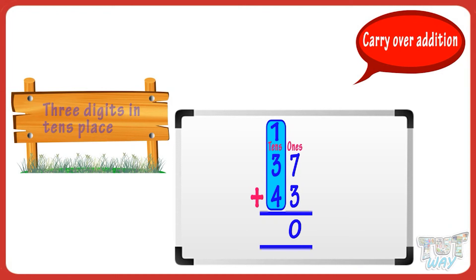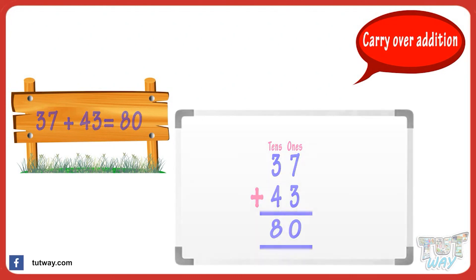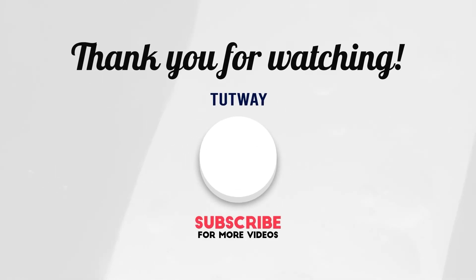1 plus 3 plus 4: 1 plus 3 equals 4, and 4 plus 4 equals 8. Now write the sum of the tens digit below the tens digits. Good! We got it. 37 plus 43 equals 80. Now let's do some more.